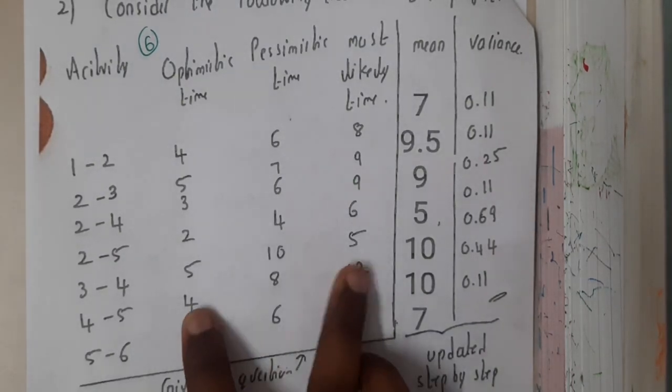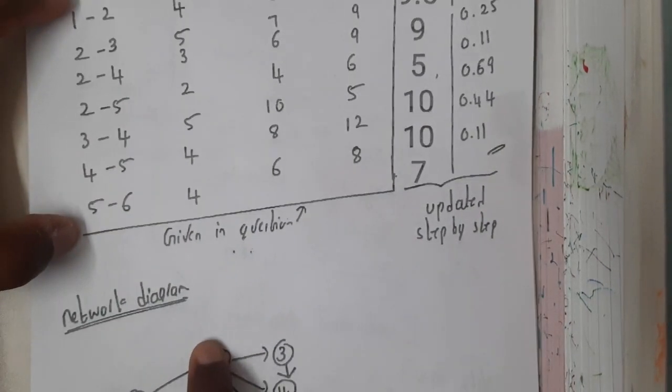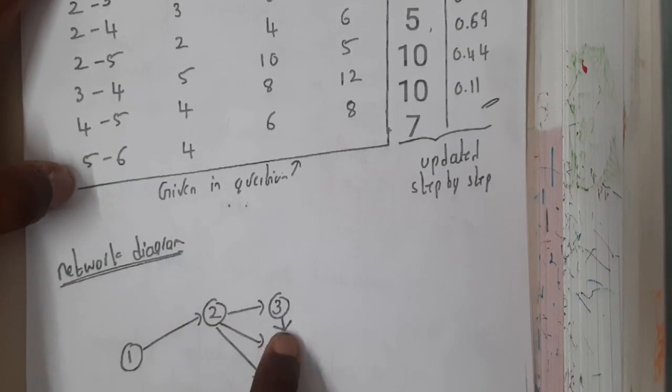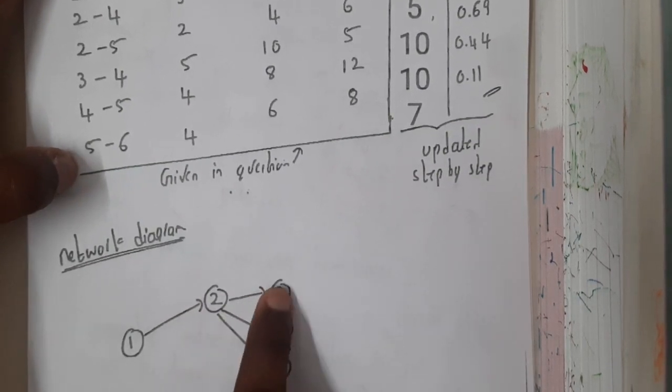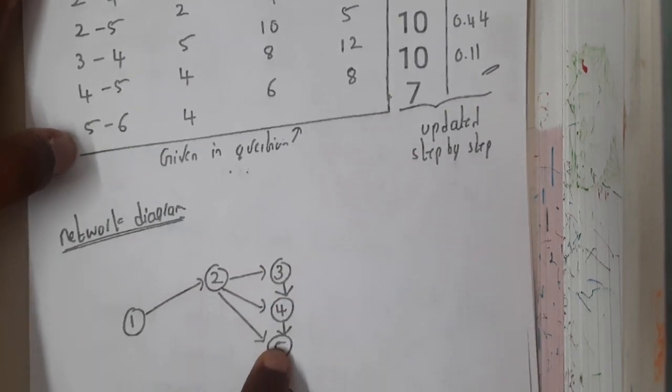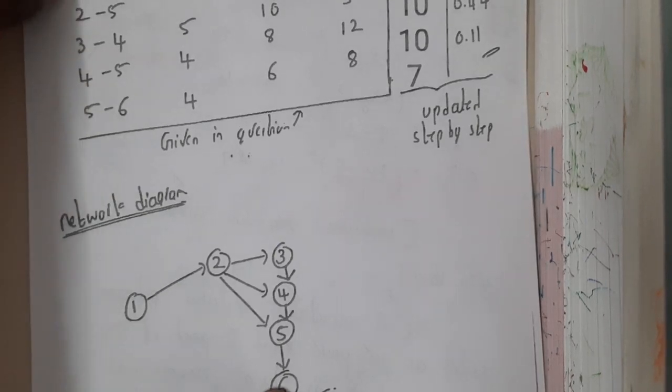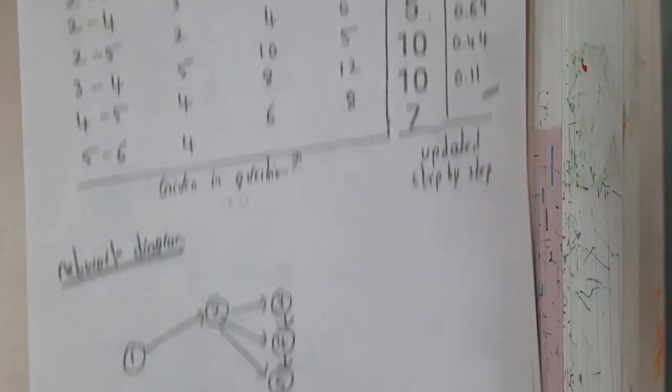First of all, draw the activity diagram for this. From 1 you are going to 2, from 2 you can go to 3 and 2 to 4 to 5, and from 3 you can go to 4, from 4 you can go to 5, from 5 you can go to 6. I just read from there and I have just shown here. Now we are done with the activity diagram.